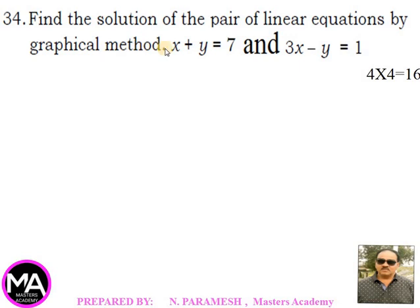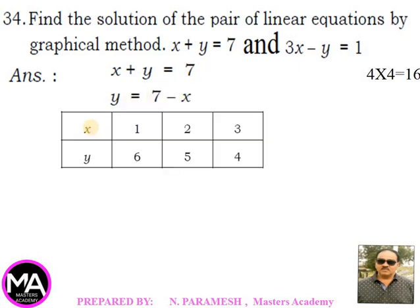x plus y is equal to 7 and 3x minus y is equal to 1. For the first equation x plus y = 7, y = 7 minus x. Substituting values: x=1 gives y=6, x=2 gives y=5, x=3 gives y=4.